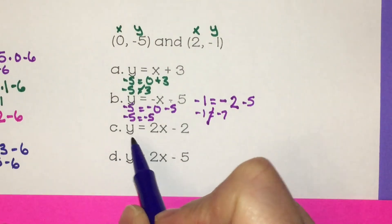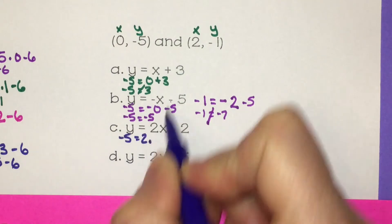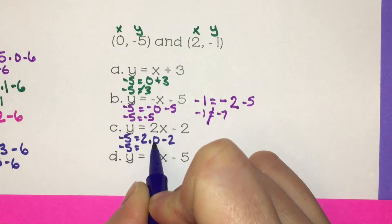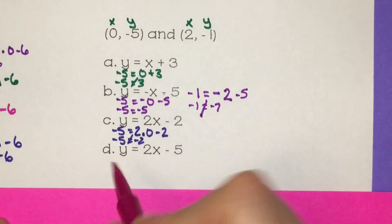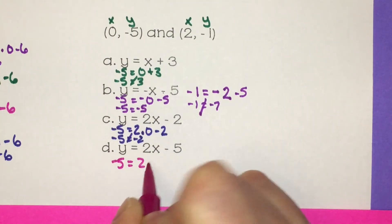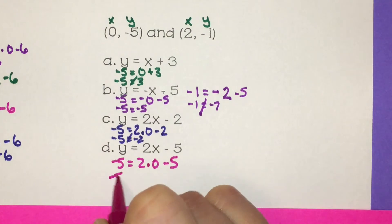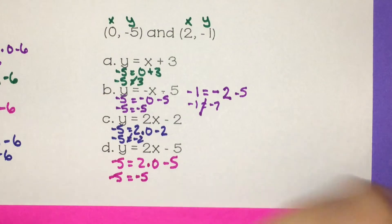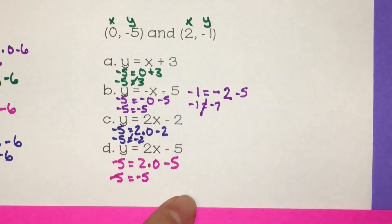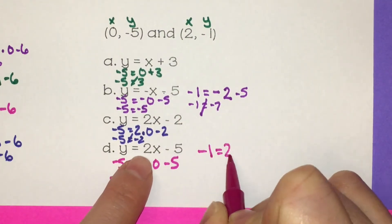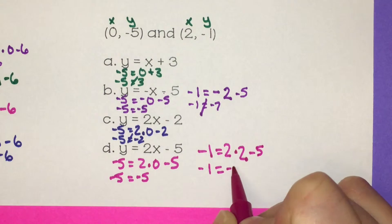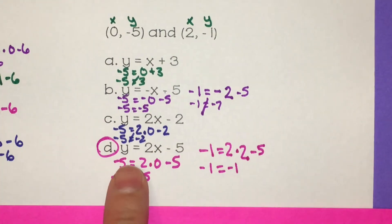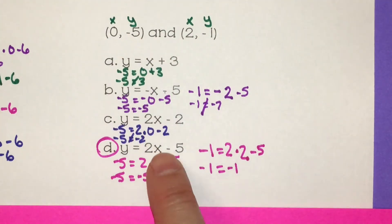Letter C: plug in negative 5 for y equals 2 times our x value is 0, minus 2. Negative 5 equals 2 times 0 is 0, and 0 minus 2 is negative 2 — so that one didn't work. Moving on to letter D: plug in negative 5 for y equals 2 times our x value is 0, minus 5. We have negative 5 equals 2 times 0 is 0, and 0 minus 5 is negative 5 — the two sides are equal. Let's plug in the second point: y is negative 1 equals 2 times x is 2, minus 5. Negative 1 equals 2 times 2 is 4, and 4 minus 5 is negative 1. It worked for both points — this is our equation: y equals 2x minus 5. Both of these points lie on this line.